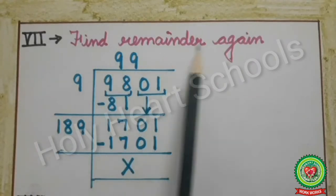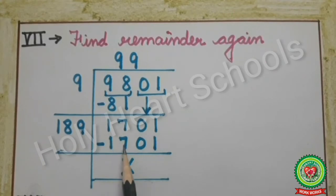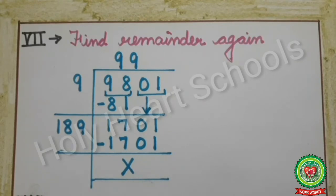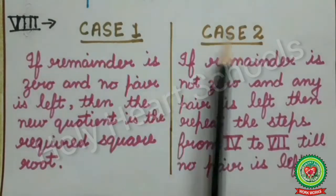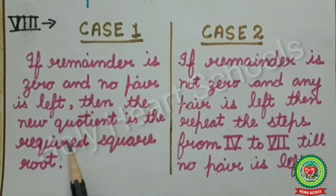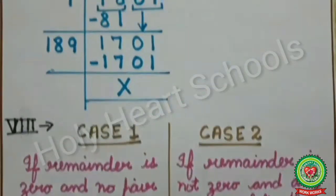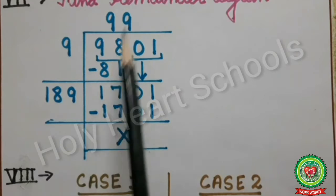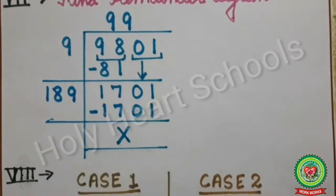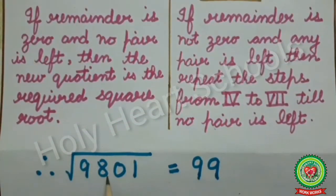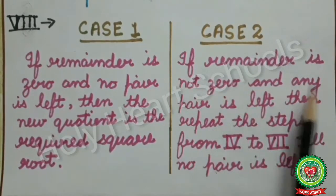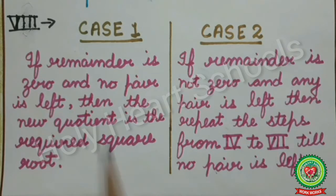Our next step is to find the remainder again by subtracting 1701 from 1701, giving 0. In long division, whenever we get 0, we put a cross. Two cases can arise: Case 1 — if the remainder is 0 and no pair is left, the quotient is the required square root. Here we have no pair left and remainder is 0, so 99 is the required square root of 9801. Case 2 — if the remainder is not 0 and a pair remains, repeat steps 4 to 7 until no pair is left.